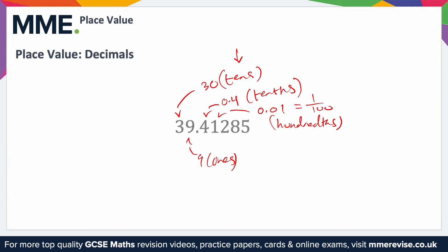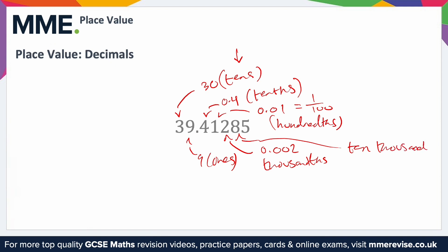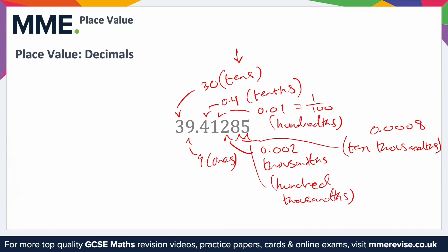This follows the same pattern as the whole numbers. After tenths and hundredths, the next column is thousandths, so the 2 is in the thousandths column. Continuing the pattern, the 8 must be in the ten-thousandths column — ten thousand of these make up one whole — and specifically the 8 represents 0.0008. Finally, the 5 is in the hundred-thousandths column, because a hundred thousand of these make up one whole, and specifically it represents 0.00005.